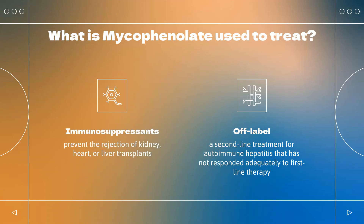Mycophenolate mofetil is indicated in combination with other immunosuppressants to prevent the rejection of kidney, heart, or liver transplants in adult and pediatric patients greater than or equal to 3 months old. It may also be used off-label as a second-line treatment for autoimmune hepatitis that has not responded adequately to first-line therapy. Other off-label uses include lupus-associated nephritis and dermatitis in children.